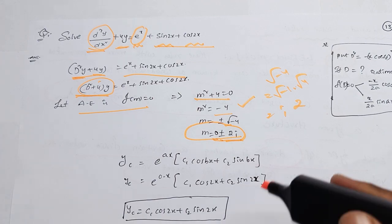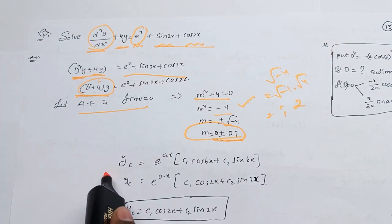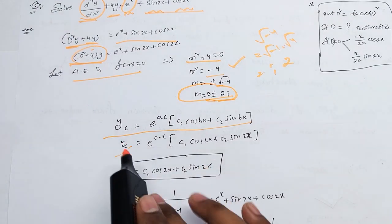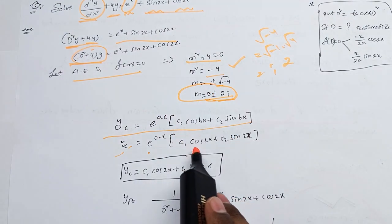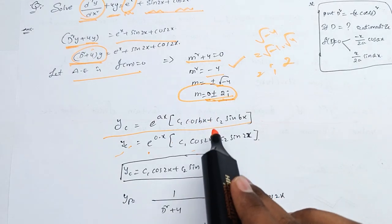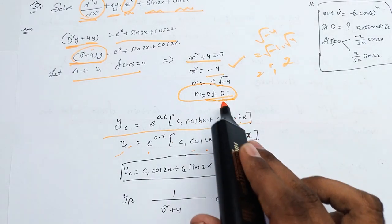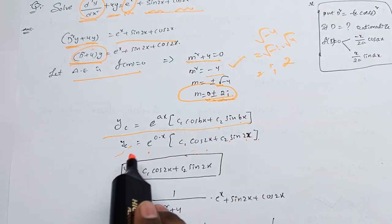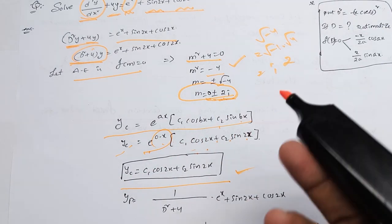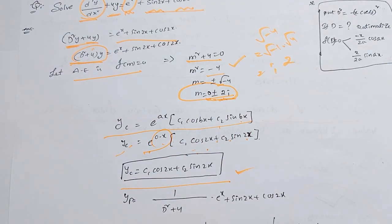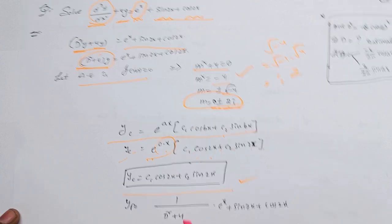This is the formula. m = 0 ± 2i, so the complementary function is: yc = e^(0·x) · (c1·cos2x + c2·sin2x). Since e^0 = 1, yc = c1·cos2x + c2·sin2x. This is the formula. Now for yp, we use 1/f(D).